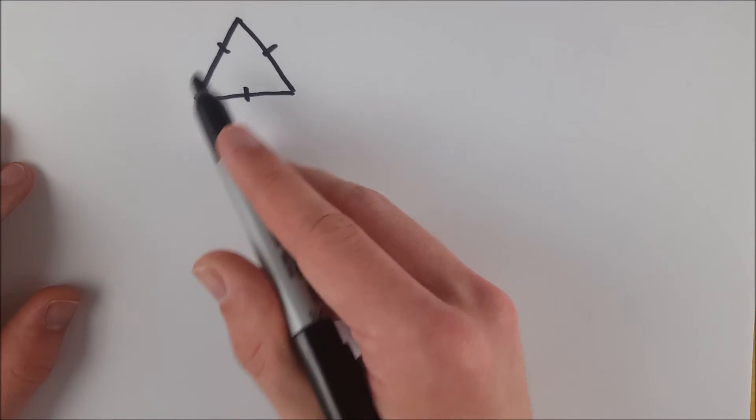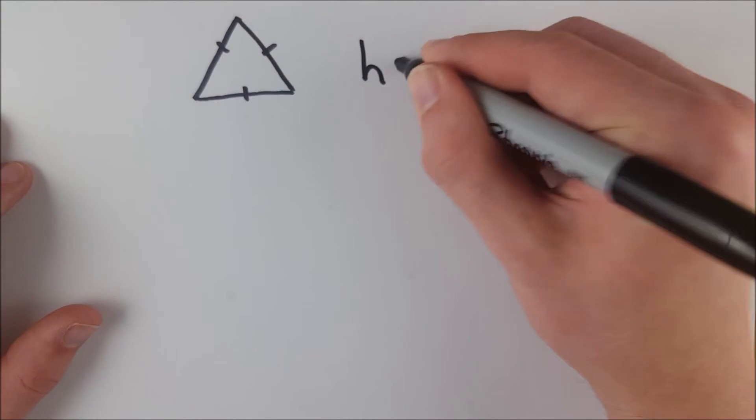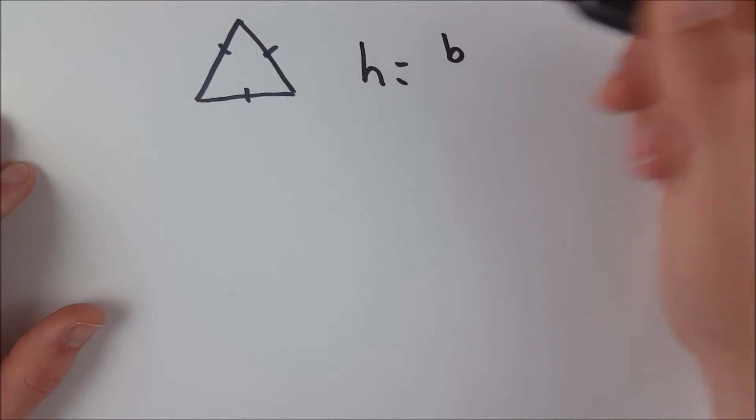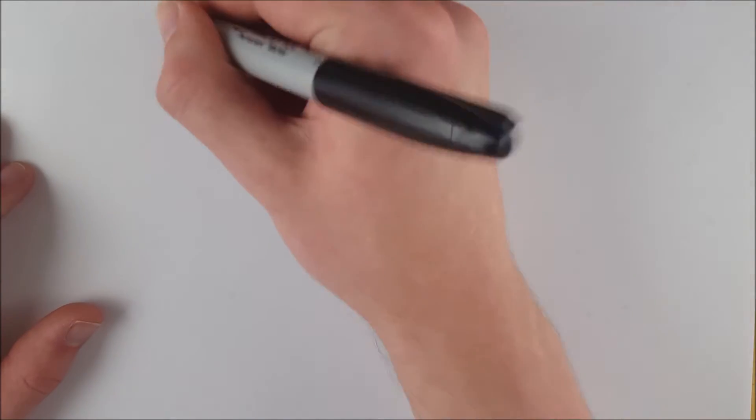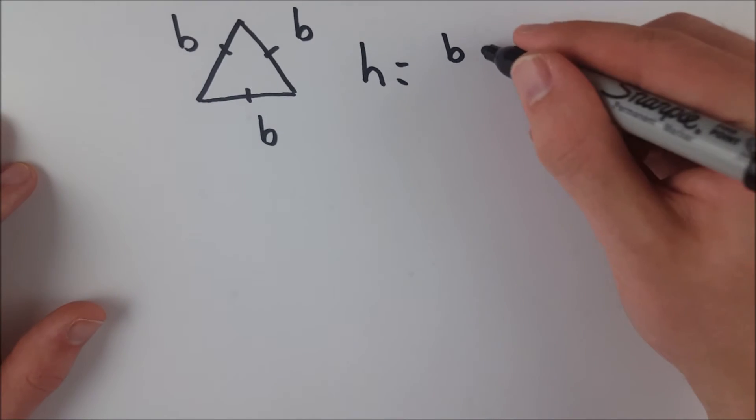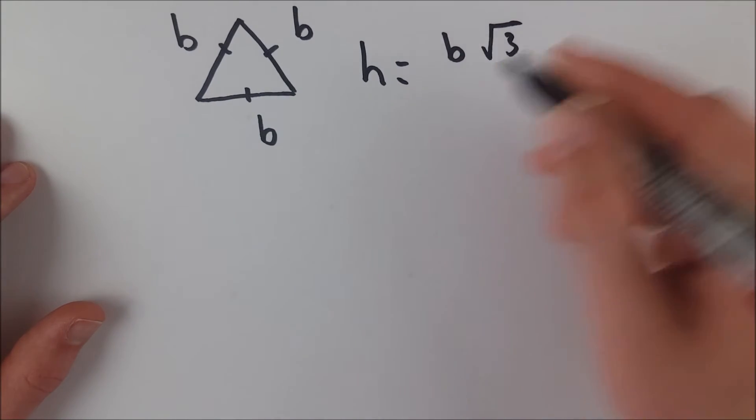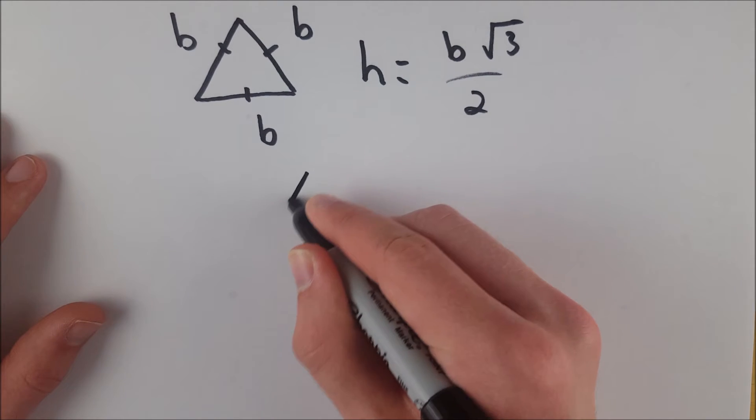So here we've got an equilateral triangle. All of its sides are congruent, which means that its height has this formula: b, which is just the base, which would be the length of any side. They're all congruent so you could pick any base. It's b multiplied by the square root of 3 divided by 2.